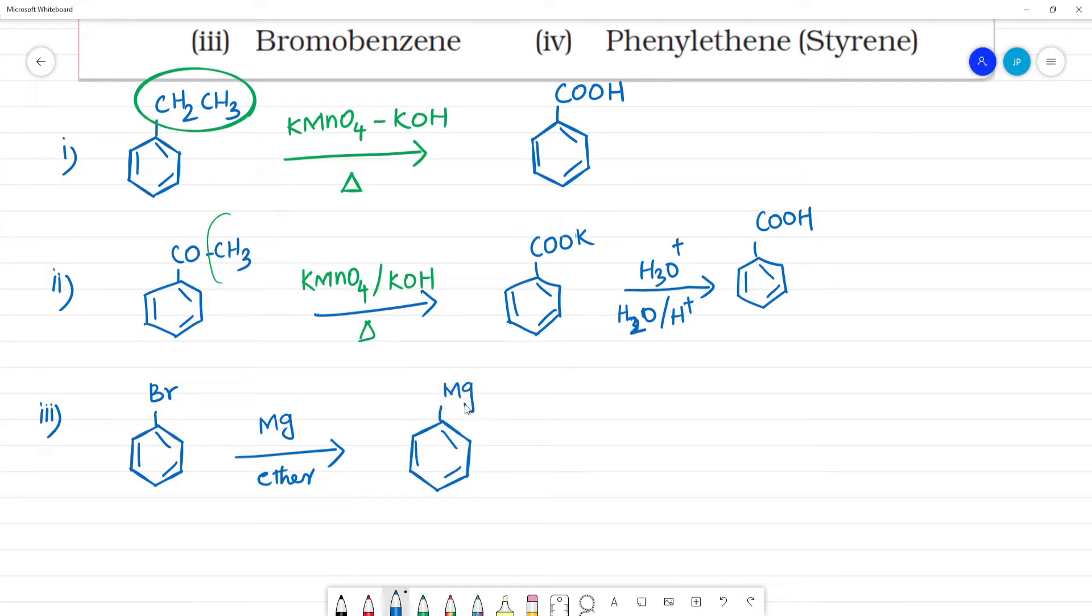We will be getting MgBr. What is CO2? CO2 hydrolysis. Acid hydrolysis. Dry ice. First number CO2 hydrolysis. Here C is a double bond O. Then MgBr. Next hydrolysis. Here COOH. This is benzoic acid. Clear.